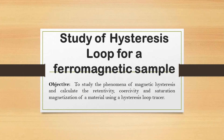The next experiment is the study of hysteresis loop for a ferromagnetic sample. The objective of this experiment is to study the phenomena of magnetic hysteresis and calculate the retentivity, coercivity, and saturation magnetization of a material using a hysteresis loop tracer.